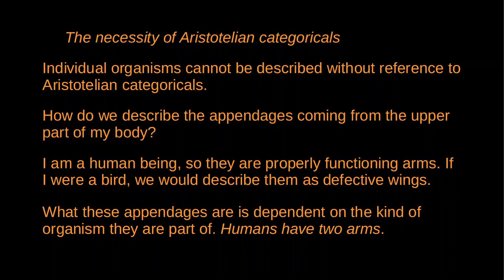Or suppose you see me chew food, swallow it, then vomit the food back up. Since I'm a human being, you know that something has gone wrong - maybe I have some illness, or severe anxiety, or the food was tainted. Because when human beings chew food and swallow it, it's to nourish their bodies. But if instead I were a bird, this might not indicate a problem. In chewing the food, swallowing it, and then regurgitating it, I might be nourishing my young. Some birds will eat food, then regurgitate it into the mouths of their offspring. We can't describe what's going on in an individual organism without reference to its kind of life form and without using these Aristotelian categoricals.